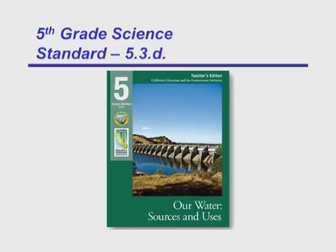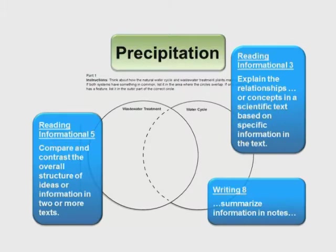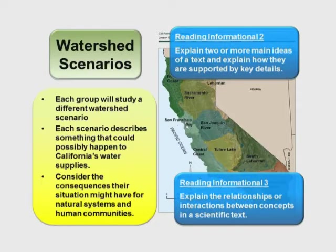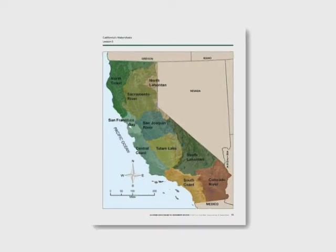Going to fifth grade: compare and contrast, explaining relationships, common forms of informational text, summarizing the information. Students read watershed scenarios and try to look at what could happen to that watershed, considering the consequences. So more of that analysis that was spoken about earlier.